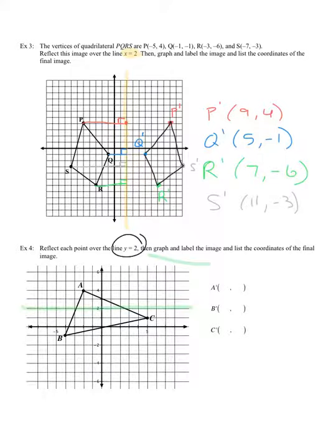And I know that it might seem weird because we're going to reflect over a line that intersects or goes through our pre-image. But that's not going to change anything that we're going to do. We're still going to count our distance. So A goes two down here. So I'm going to go two more. And my line isn't drawn very well, but there it is. So A prime is going to be negative 2, 0.